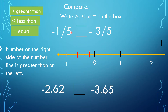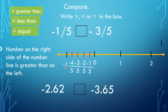So we mark 1, 2, 3, 4, 5 divisions. The first line from 0 going left is negative 1 fifth, then negative 2 fifth, negative 3 fifth, negative 4 fifth, and this last one is negative 5 over 5, which equals negative 1. Now, who's on the right? Negative 1 fifth is on the right, and negative 3 fifth is further left. Therefore, negative 1 fifth is greater than negative 3 fifth.